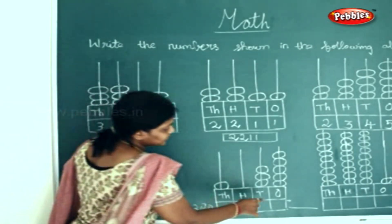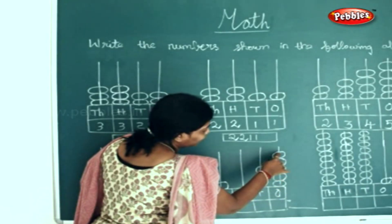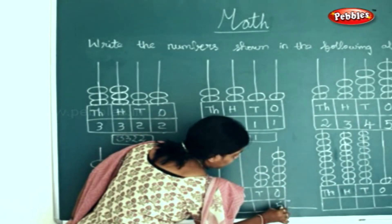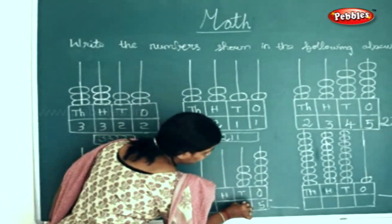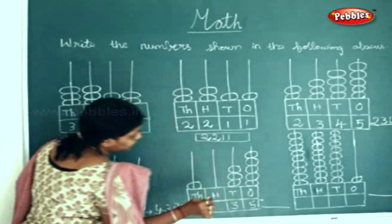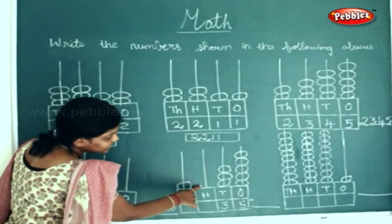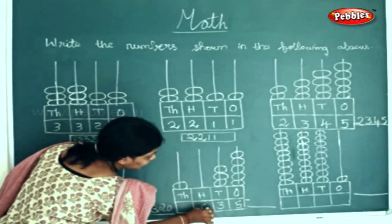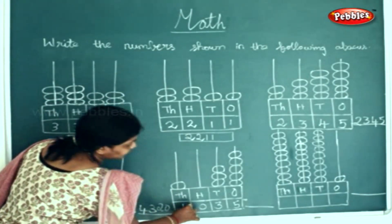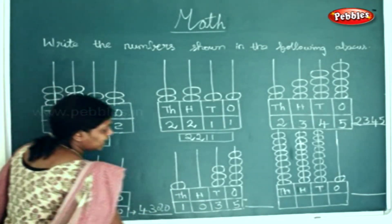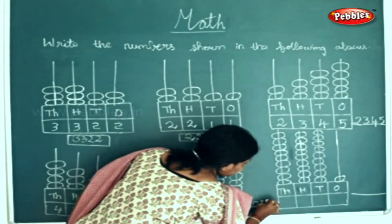Next sum. How many beads in the ones place? One, two, three, four, five. How many beads in the tens place? One, two, and three. How many beads in the hundreds place? Do you find any beads? No beads, so you write a zero. How many beads in the thousands place? One. So this can be written as one thousand and thirty five.